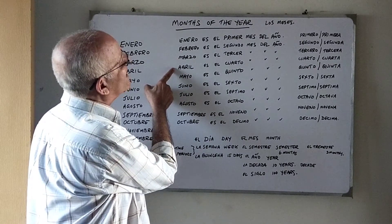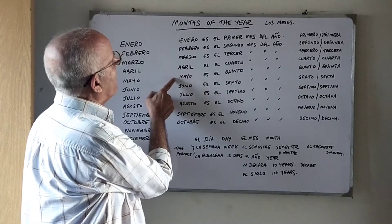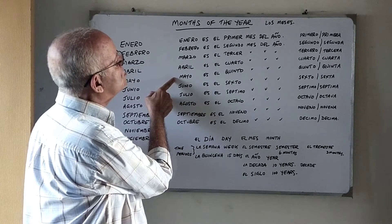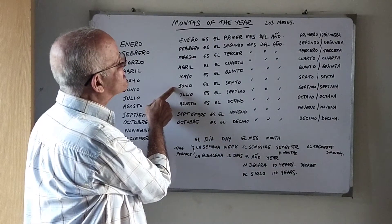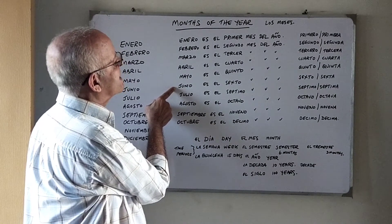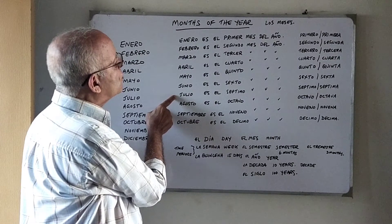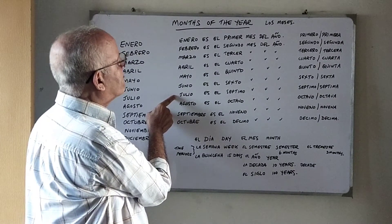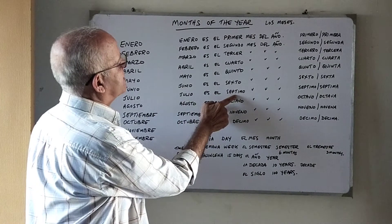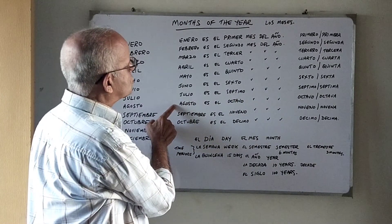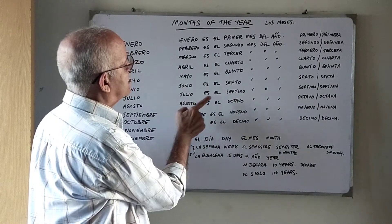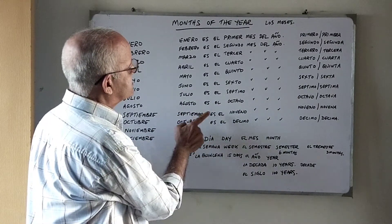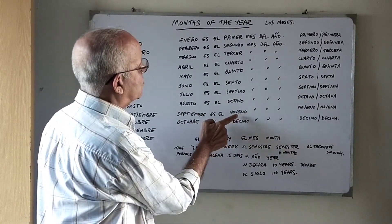Abril es el cuarto mes del año — fourth month. Mayo es el quinto mes del año — fifth month. Quinto means fifth. Junio es el sexto mes del año — sexto means sixth. Julio es el séptimo mes del año. Séptimo means seventh. Agosto es el octavo mes del año — octavo means eighth. Septiembre es el noveno mes del año — noveno means ninth.